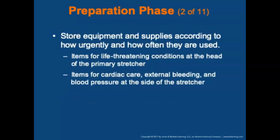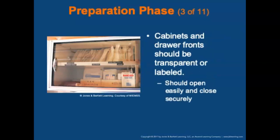Store equipment and supplies according to how urgently and how often they are used. Items for life-threatening conditions should be at the head of the primary stretcher. Items for cardiac care, external bleeding, and blood pressure should be at the side of the stretcher. Cabinets and drawer fronts should be transparent or labeled and should easily open and close securely.